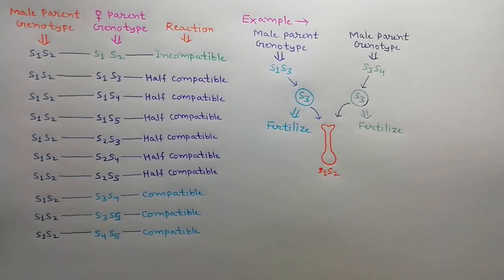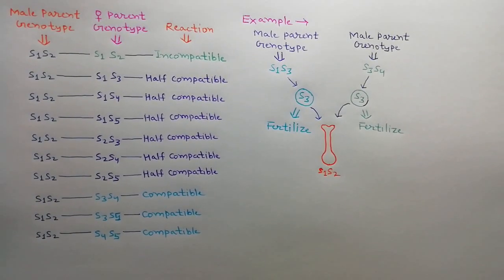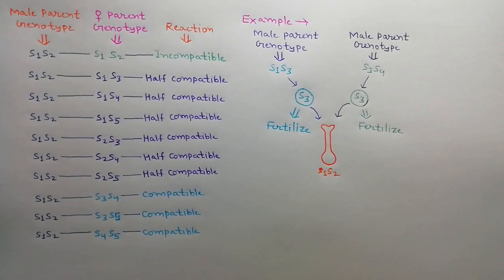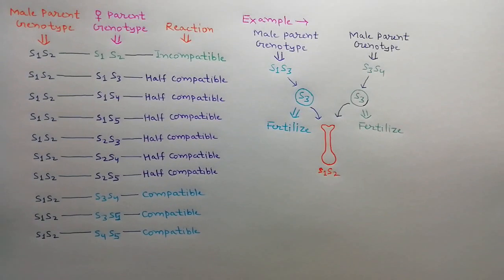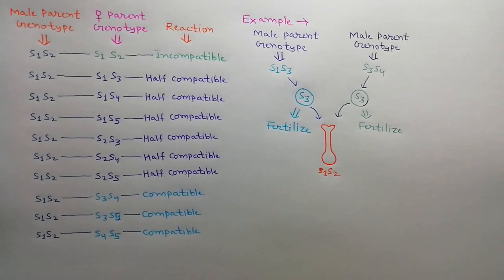To understand gametophytic self incompatibility with another example: here are two male parents, one with genotype S1S3 and another with genotype S3S4. The female parent genotype is S1S2. The S3 pollen grain from male parent S1S3 fertilizes the female parent, and the S3 pollen grain from male parent S3S4 also fertilizes the female parent. Hence, this self incompatibility is controlled by the genotype of the pollen grain.